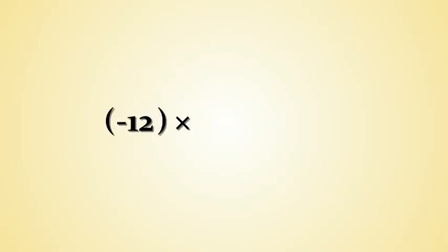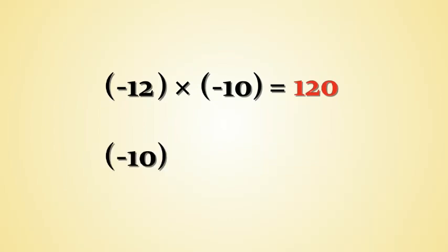Now observe the following example. Minus 12 multiplied by minus 10 is equal to 120, which is a positive number, as the result of multiplying two negative numbers is a positive number. Let's change the order of the numbers being multiplied. Minus 10 multiplied by minus 12 again gives a positive product of 120.